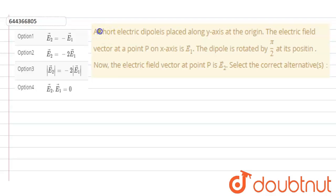Hello students, so the question is: a short electric dipole is placed along y-axis at the origin. The electric field vector at a point P on the x-axis is E1. The electric dipole is rotated by π/2 at its position. Now the electric field vector at point P is E2. Select the correct alternative.